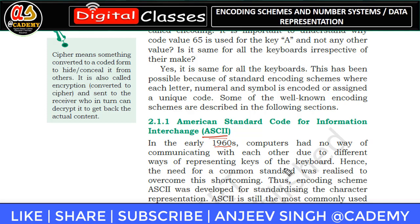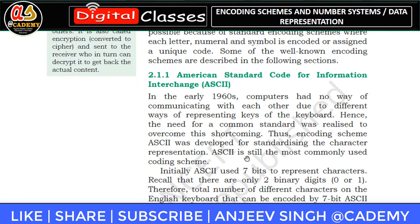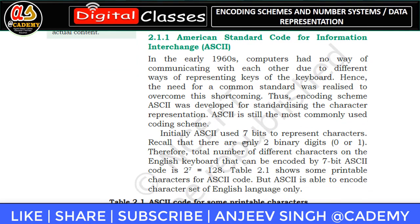To eliminate this communication gap, the ASCII system was developed. ASCII is a 7-bit code. Since binary numbers have only two digits — zero and one — the total number of different characters that can be formed with 7 bits is 2 to the power of 7, which equals 128. If you have any number of bits, just calculate 2 to the power of n to find the number of unique values.